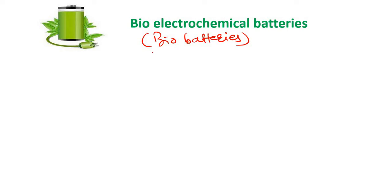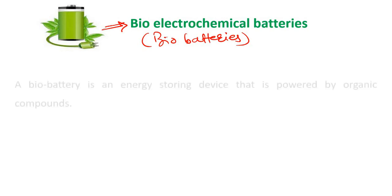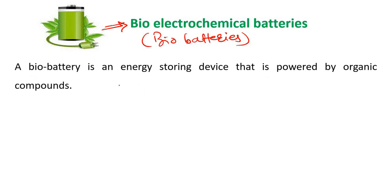Plants themselves make their own food, and from that food, glucose is formed. That glucose is utilized for the generation of electricity. Bio-batteries perform the same function. A bio-battery is a device that stores energy — it is an energy-storing device powered by organic compounds like glucose.